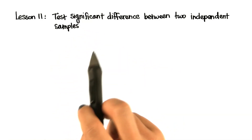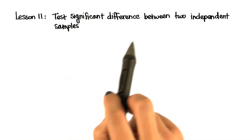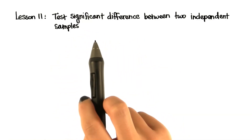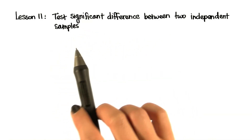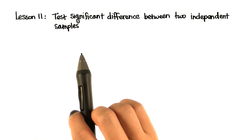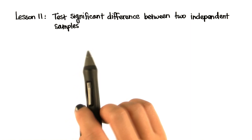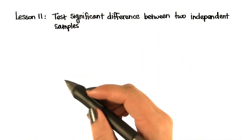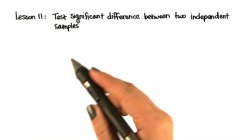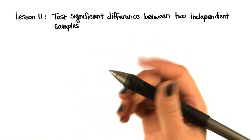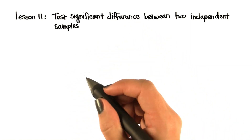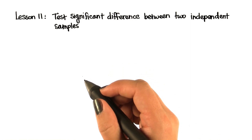In lesson 11, you learned how to test for a significant difference in means between two independent samples. But in many research studies, we want to compare means from more than two independent samples.